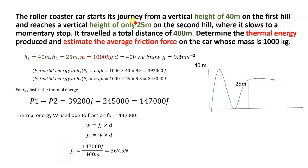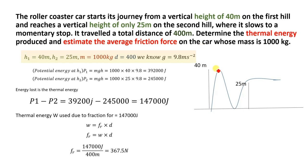Hello everyone, welcome to Easy Do. Today we are going to solve this numerical: a roller coaster car starts its journey from a vertical height of 40 meters. We will calculate the thermal energy produced and estimate the average frictional force on the car. The roller coaster goes from height 1 down and back up to height 2 of 25 meters, where it stops.